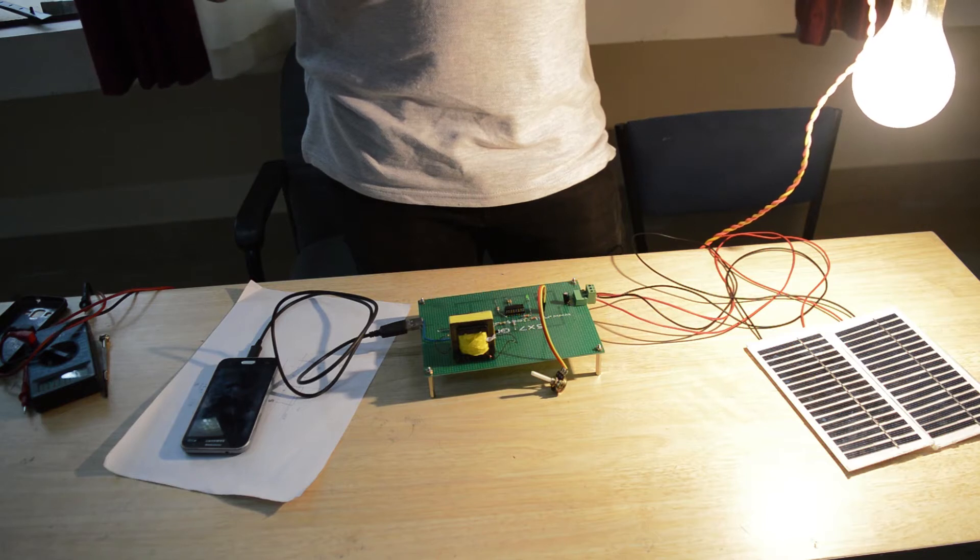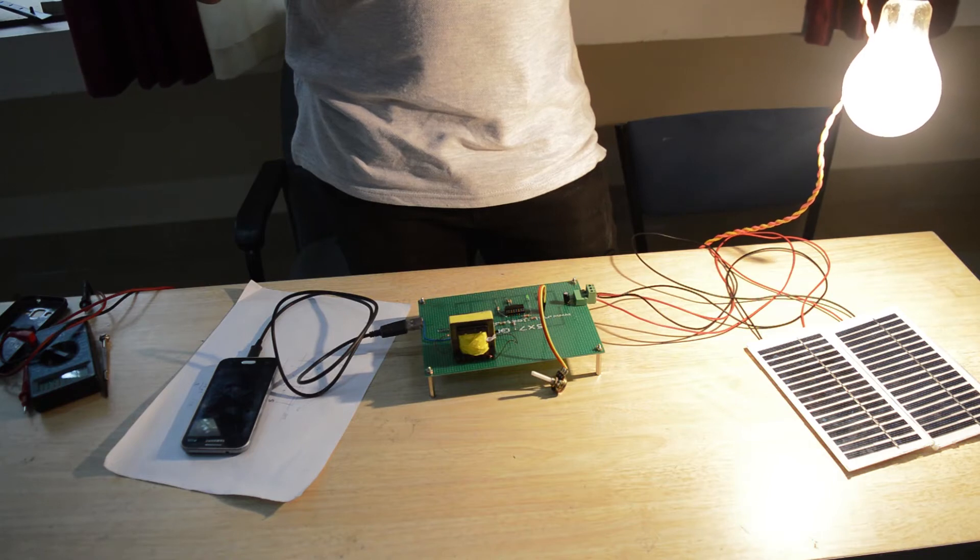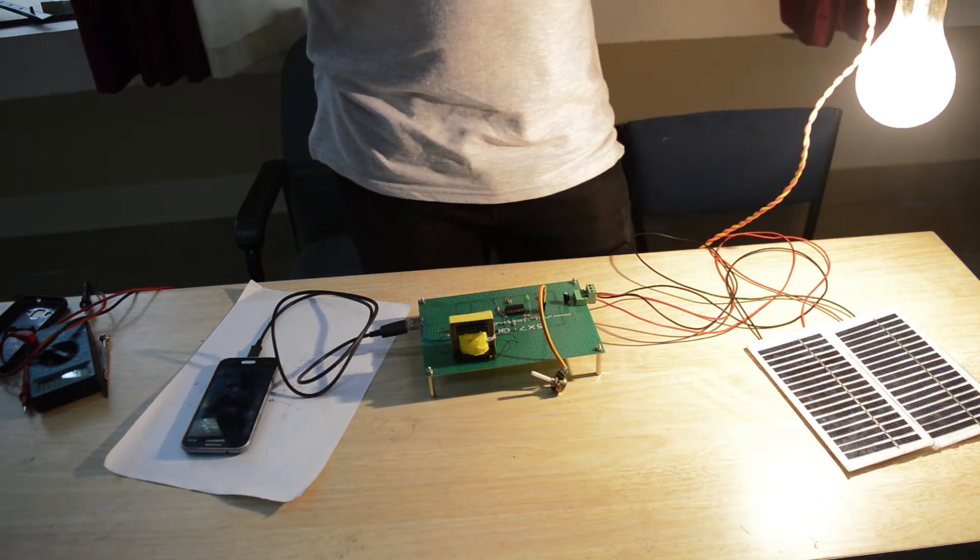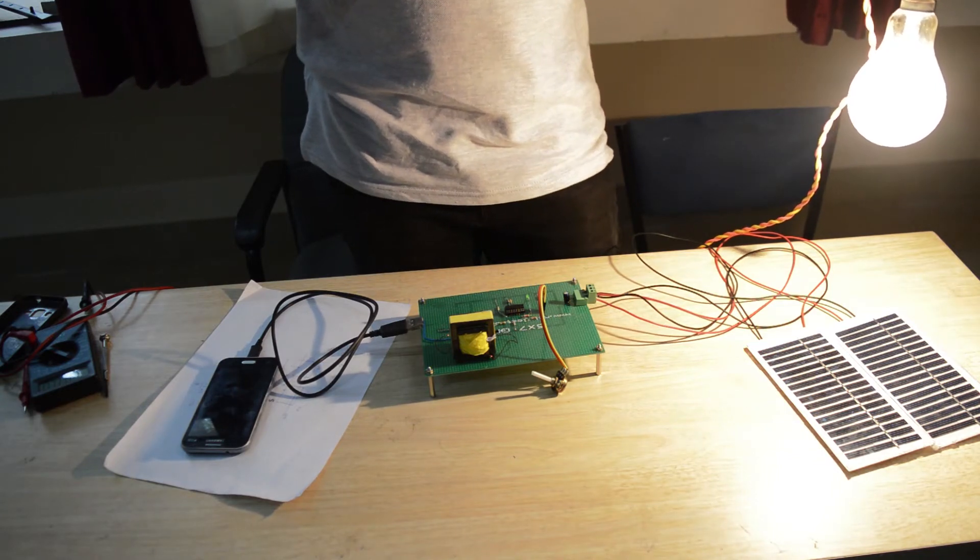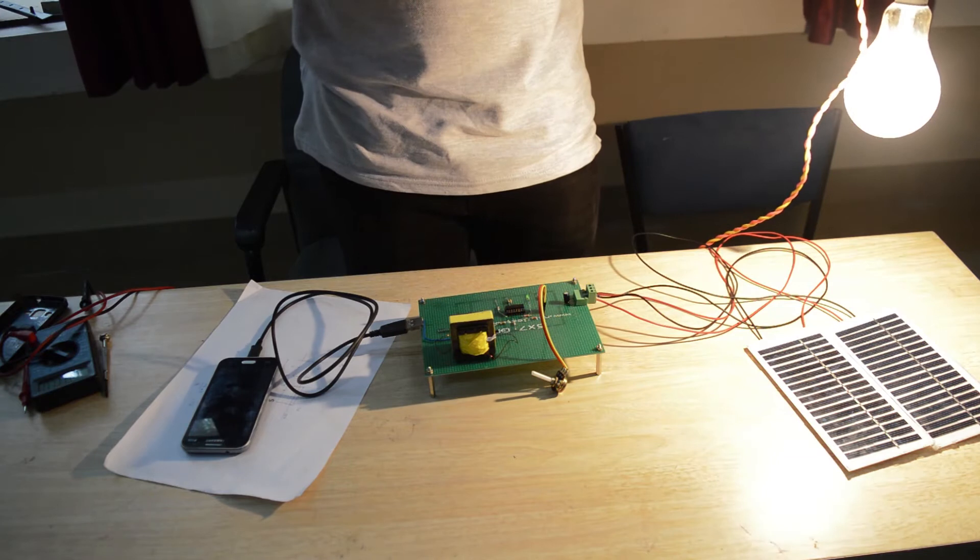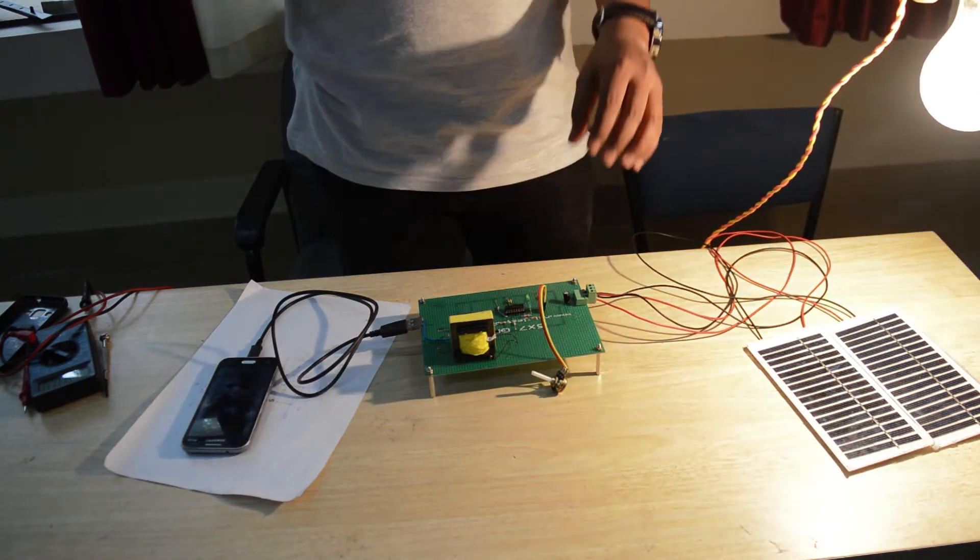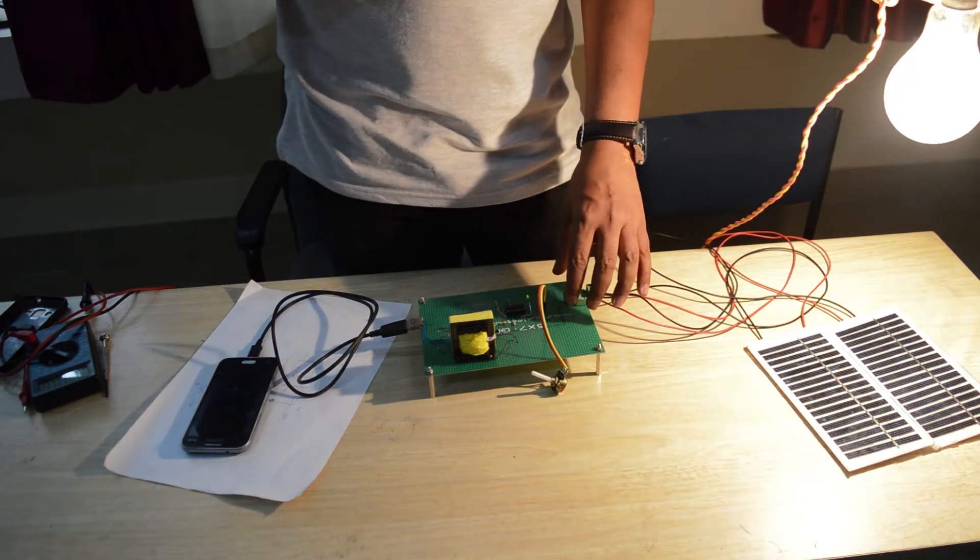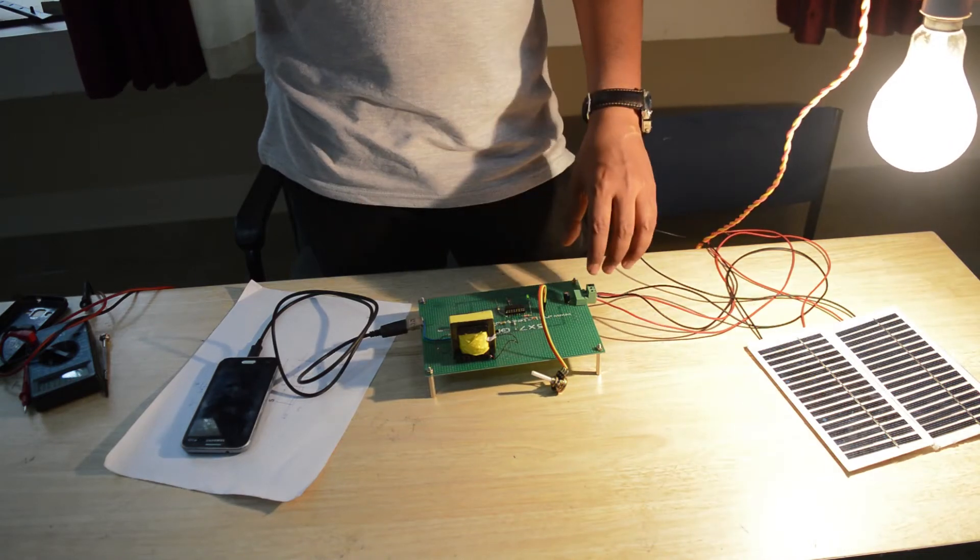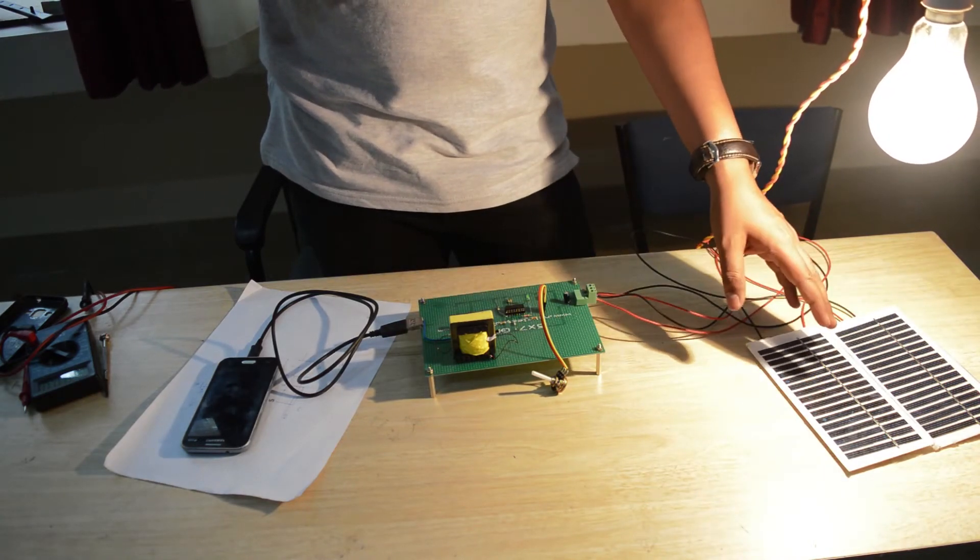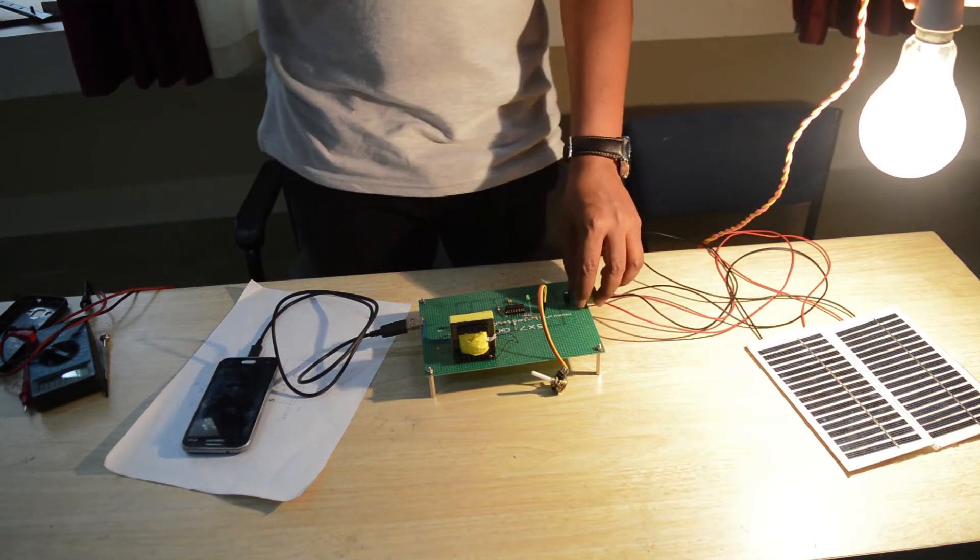We have our buck converter here which controls the voltage of the solar panels such that we get constant output voltage. Both these panels have 7.5 volts, so we have 15 volts at the input. We need to get an output of 5 volts.